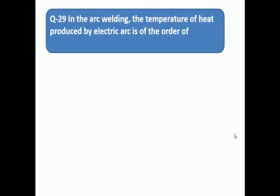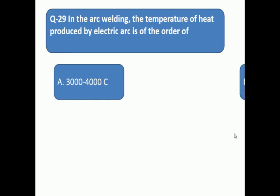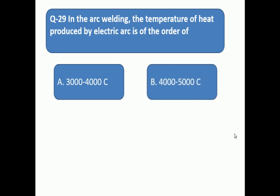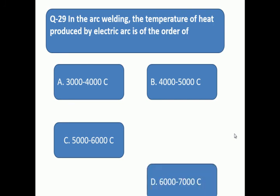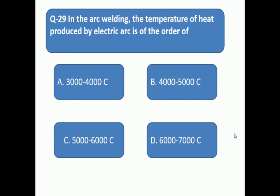Question 29: In arc welding, the temperature of heat produced by electric arc is of the order of. In arc welding, the temperature of heat produced - what is the temperature? A: 3000-4000°C, B: 4000-5000°C, C: 5000-6000°C, D: 6000-7000°C.